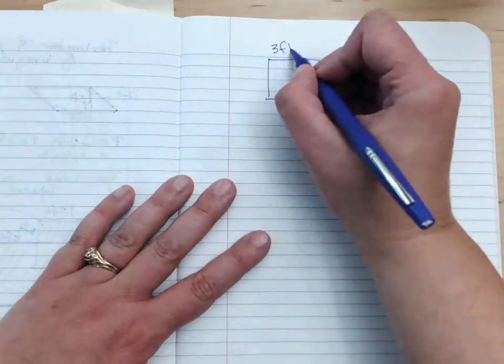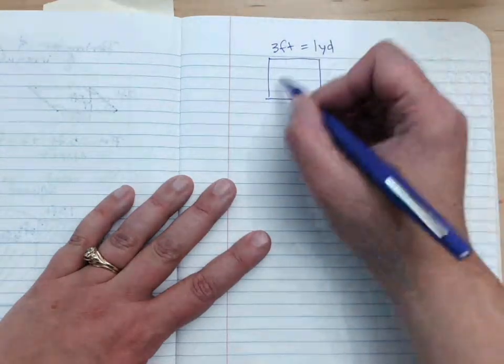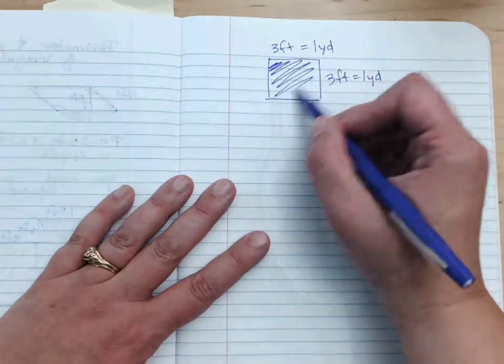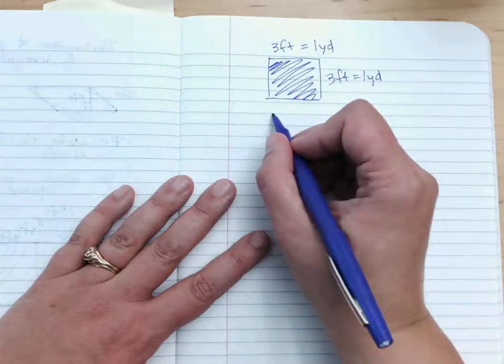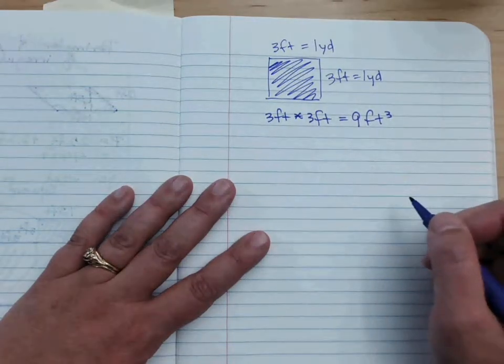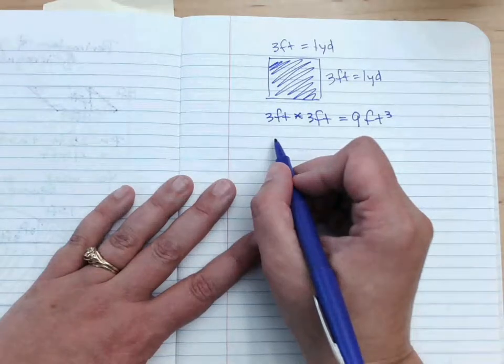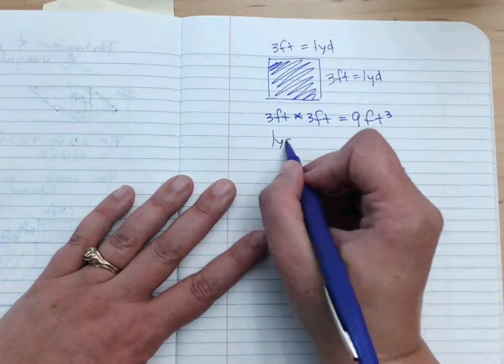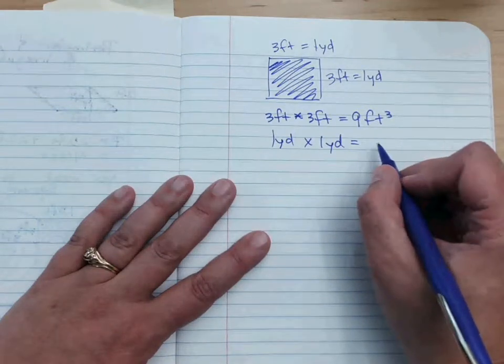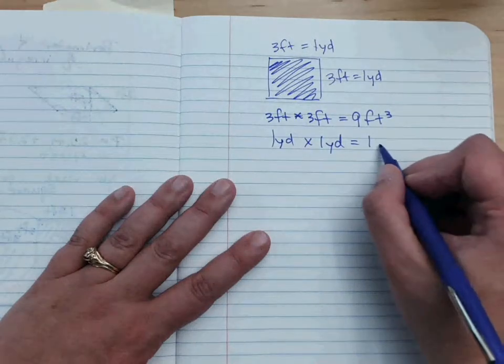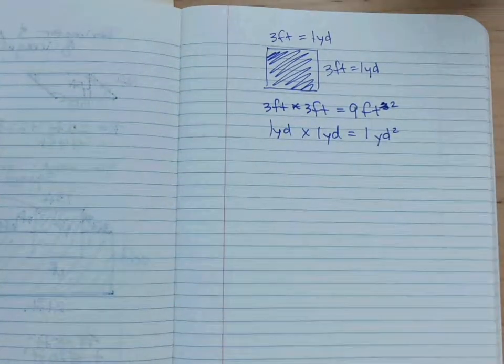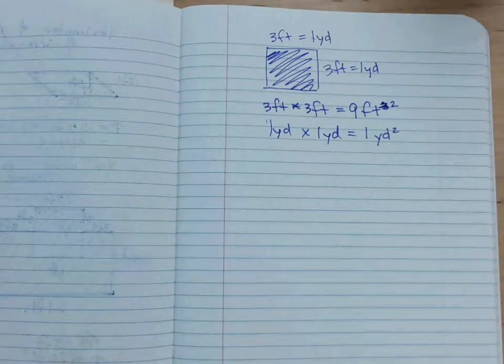Three feet equals one yard, and what if I just had a square? Three feet equals one yard. So if I find the area, three times three is, yeah, three feet times three feet equals nine feet squared. What if I find the area in yards? So it would be one yard times one yard is equal to, anyone? One times one is one, yard times yard is yard squared.